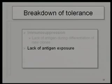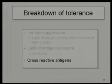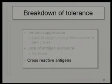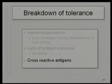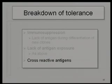Cross-reactive antigens are a very significant point. I am tolerant to most of my own antigens. Let's say my B cells are tolerant to a self-antigen, but a foreign antigen arrives that my T cells can still recognize because it has some similarities to my self-antigens. Those T cells are going to react to it and help B cells start producing antibodies.